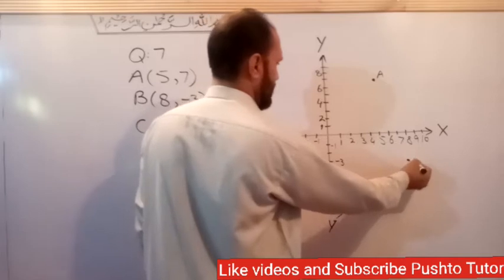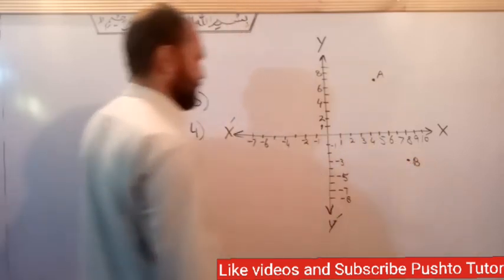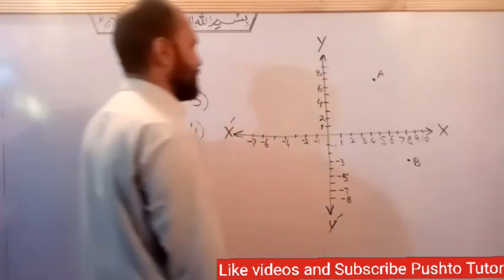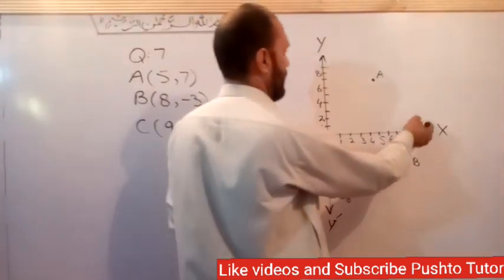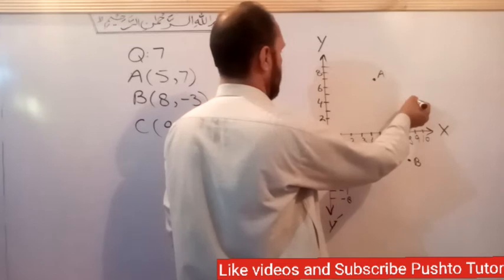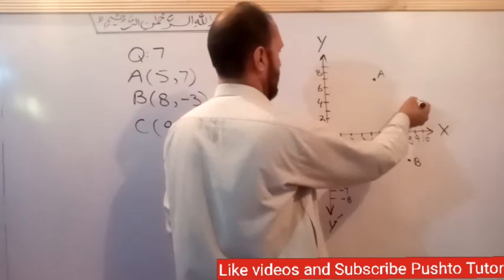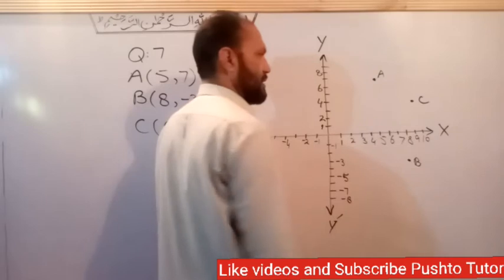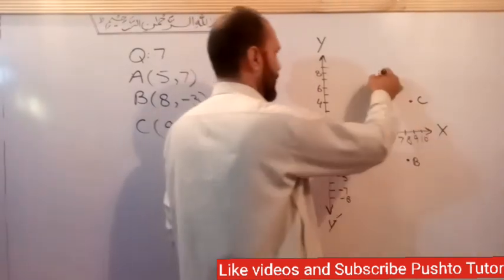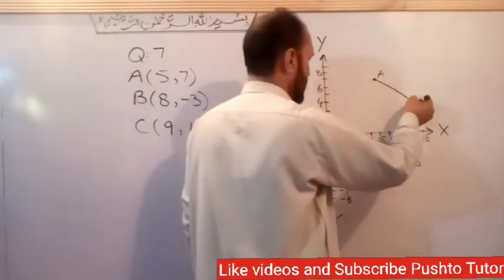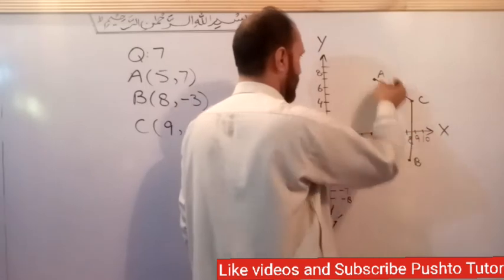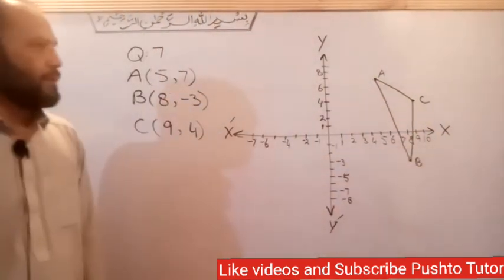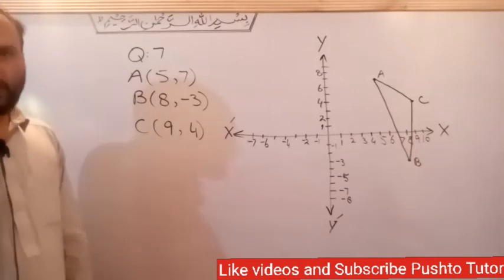For point C, it is (9, 4). It is in the first quadrant, with x at 9 and y-axis at 4. We plot all three points and join them to form the required triangle.